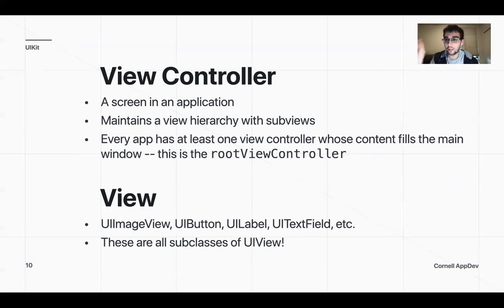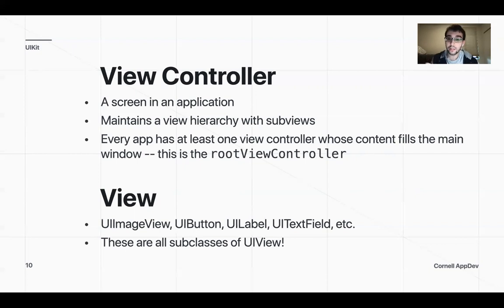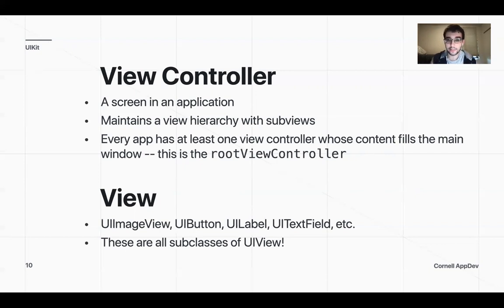Views are basically all the little elements you see on your screen. Sometimes you might see an image — that's usually in a UIImageView. You might be pressing a button, which is a UIButton. We have text sometimes, which is a UILabel. You might be able to type in a text box, which is a UITextField. These are all subclasses of UIView, and you can also instantiate a UIView if you want to make something like a square.